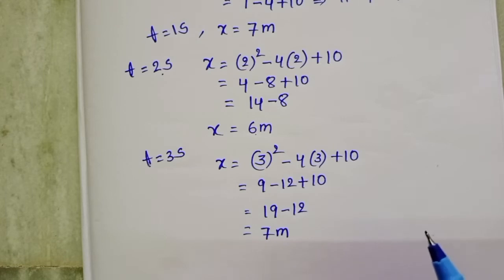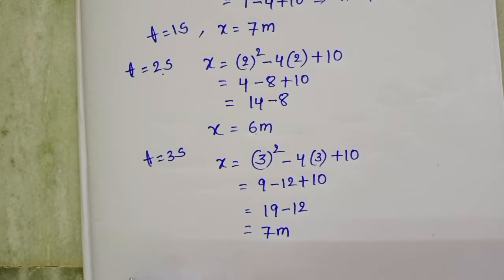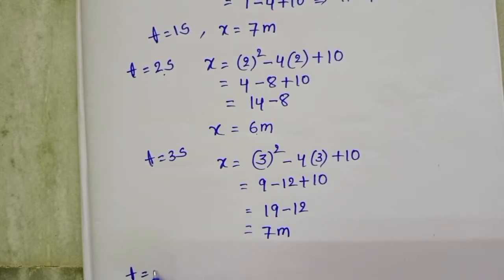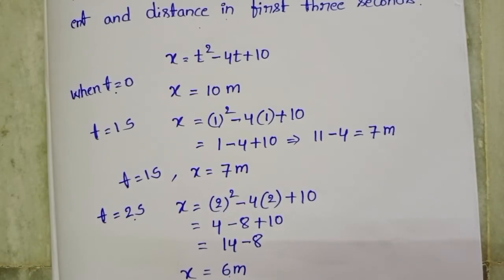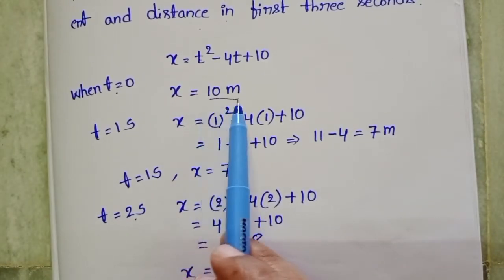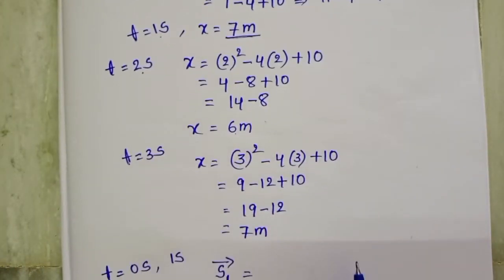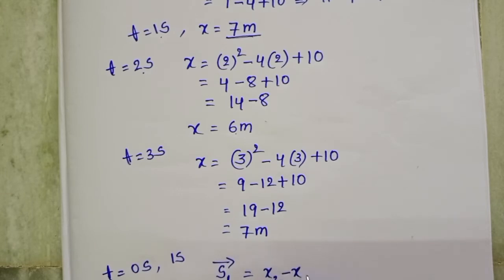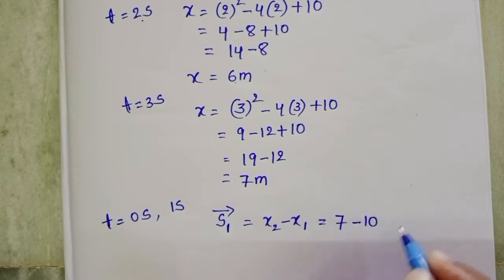The shortest distance between the initial and final positions is called displacement. Displacement from 0 to 1 second: S1 = x2 minus x1 = 7 minus 10 = minus 3 meters.